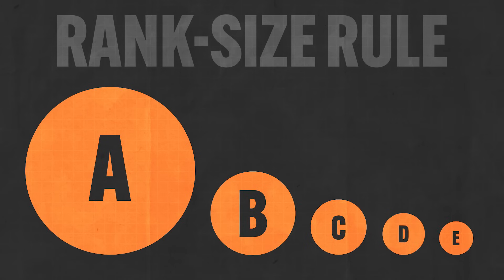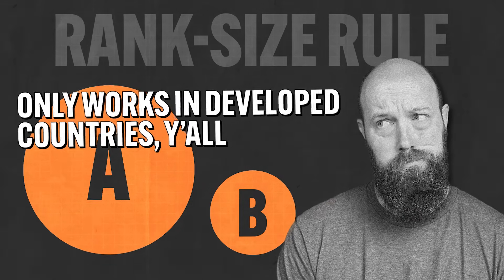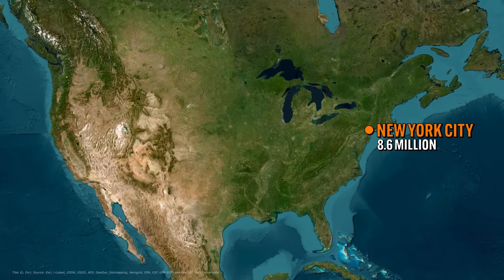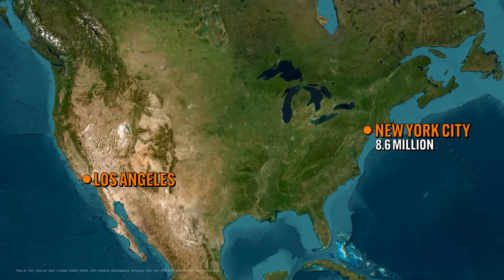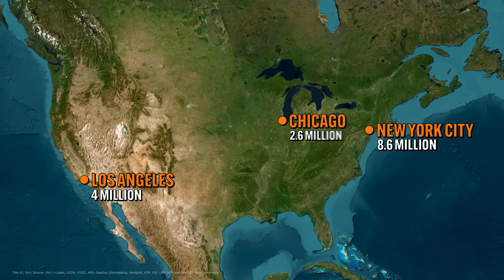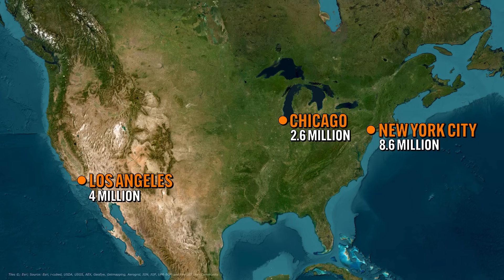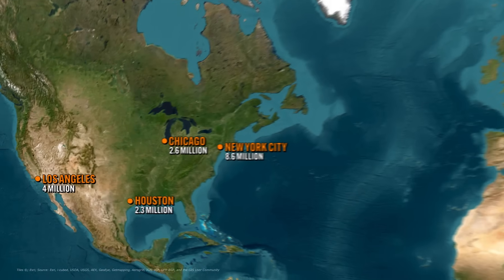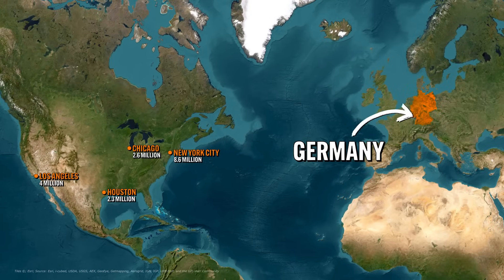This method of predicting city size really only works in developed countries with a long history of urbanization, and even then only kind of works. The United States is a pretty good example: New York City has about 8.6 million people, so the next largest city should be about half as populous — and Los Angeles is second with about 4 million. Chicago has 2.6 million, about a third of New York City. But then Houston's population is almost the same as Chicago's, so maybe it's less of a rule and more of a suggestion. Among developed countries, Germany's cities probably follow the rank-size rule the closest.